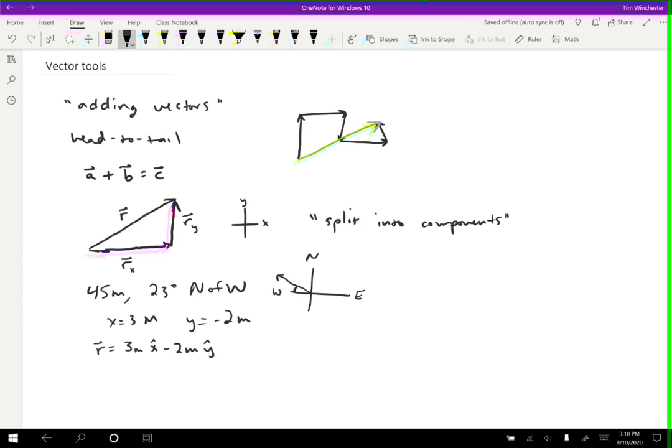Another notation for this which is really common, although I'm not as excited about it, is the one that the textbook uses. Instead of x, y, and z-hat, we can use i, j, and k. I mean the exact same thing, you just have to remember that i corresponds to x.